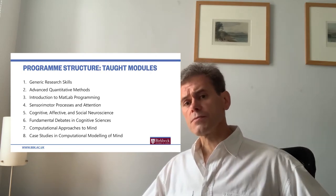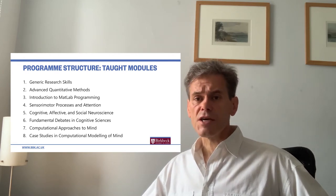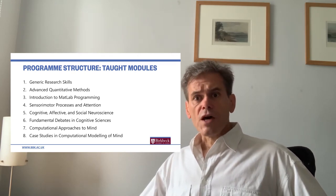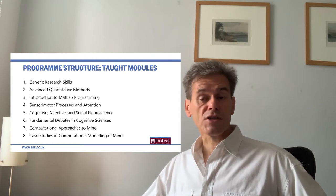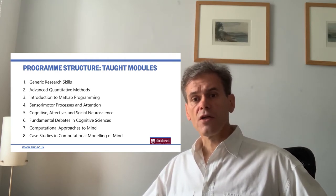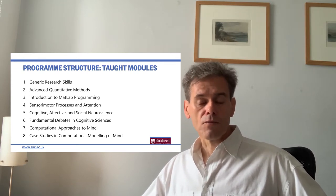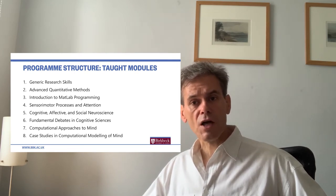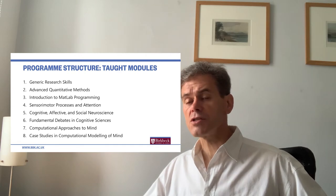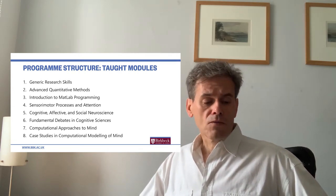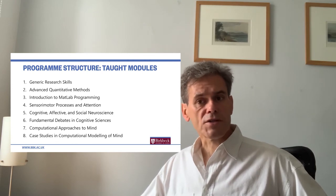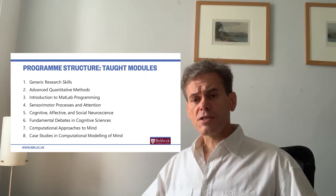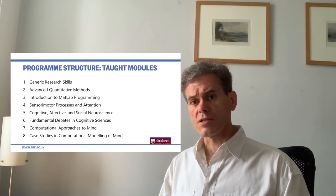The programme consists of eight modules and a dissertation. The dissertation distinguishes the MSc from the MA, but the taught modules are the same. We have a Generic Research Skills module covering the basics of how to do research — literature search, library skills, written and presentation skills, presenting at conferences, how to write journal articles and grant applications, and ethics in research.